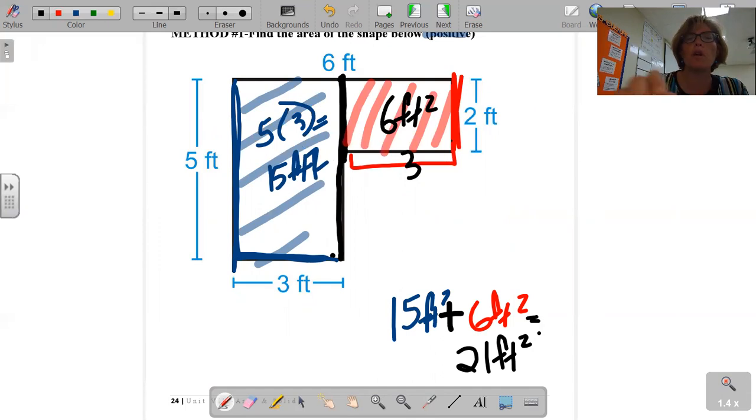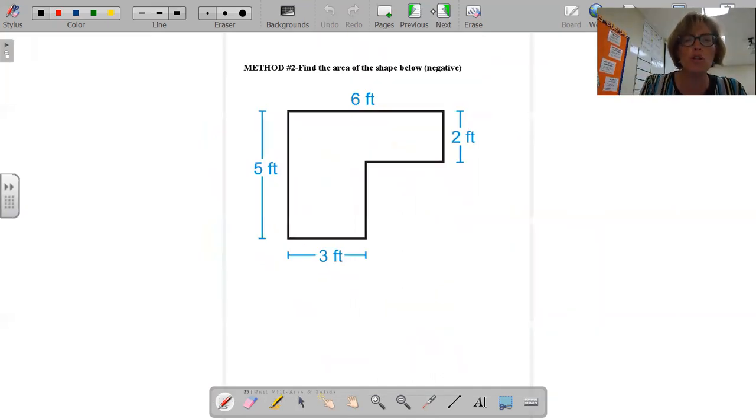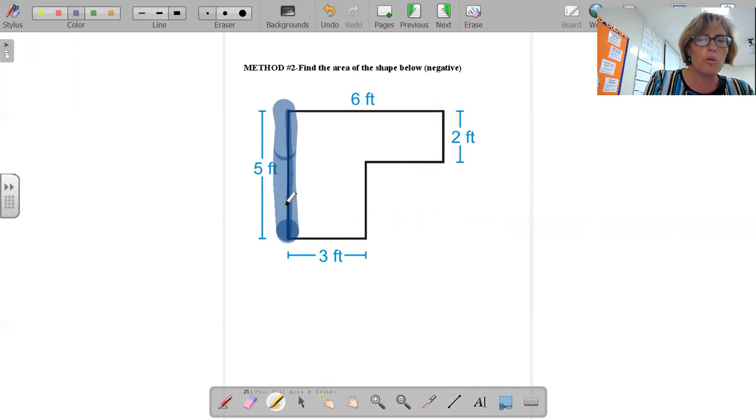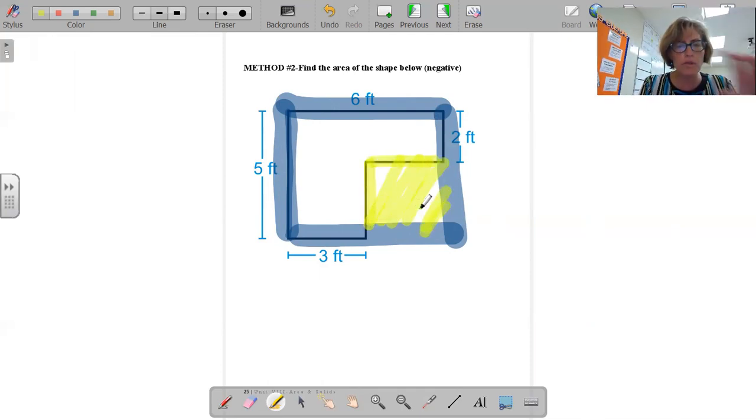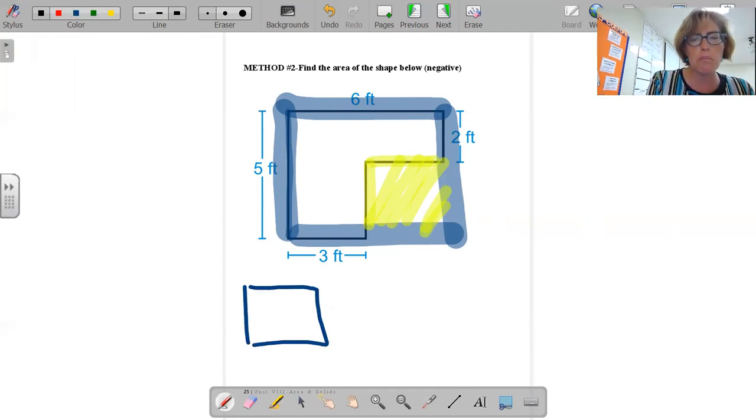You need to be comfortable also with what's called negative space. So we're going to find the exact same equation by doing this. We're going to see this as a larger rectangle, and we're going to take out what would be this negative space. So in this case, it's going to be something minus something. That's why we call it negative.